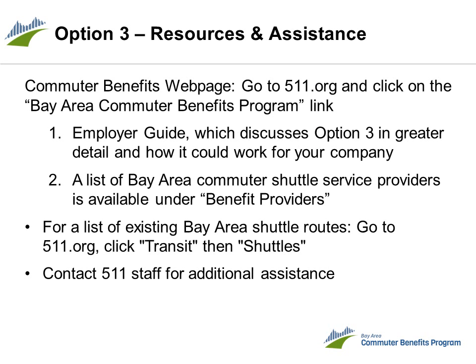When setting up Option 3, there are resources available to help. Go online to 5-1-1.org and click on the Bay Area Commuter Benefits Program link. Here, under the helpful resources section, you'll find the employer guide which discusses Option 3 in greater detail and how it might work for your company. Under the same section, you'll also find a list of benefit providers that includes a list of commuter shuttle providers here in the Bay Area.